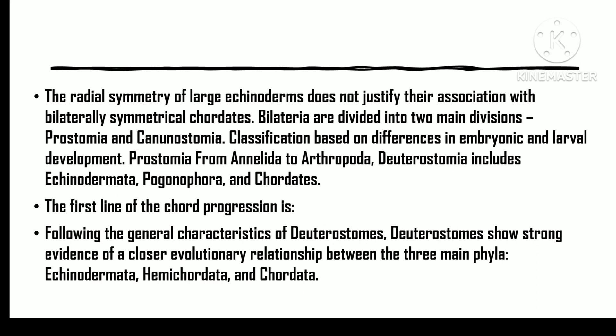The radial symmetry of adult echinoderms would disapprove of a relationship with the bilaterally symmetrical chordates. Regarding the divisions — Protostomia and Deuterostomia — this division is based on differences in embryonic and larval development. Protostomia includes annelida to arthropoda, while deuterostomia includes echinodermata, pogonophora, and chordates.